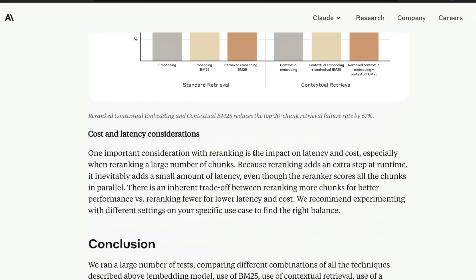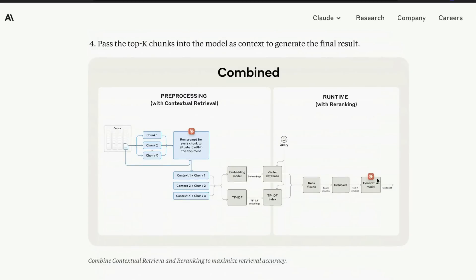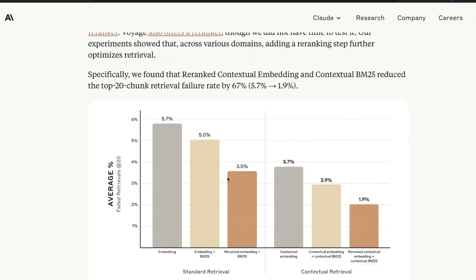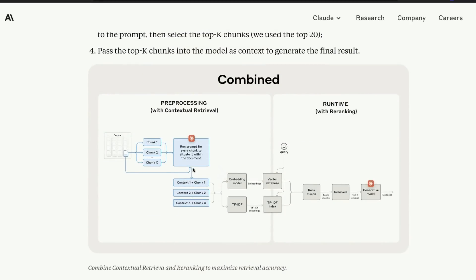One important consideration: re-ranking will introduce latency because it happens at the inference stage — you're adding one additional step. Let's say you've got 100 retrieved chunks going into re-ranking; you ask the re-ranker to score and sort them in descending order, then send to the large language model. There is going to be latency there and definitely a cost element — not just for re-ranking, but also for the pre-processing, though that is a batch process happening at midnight, while re-ranking happens at runtime when the user is requesting something.